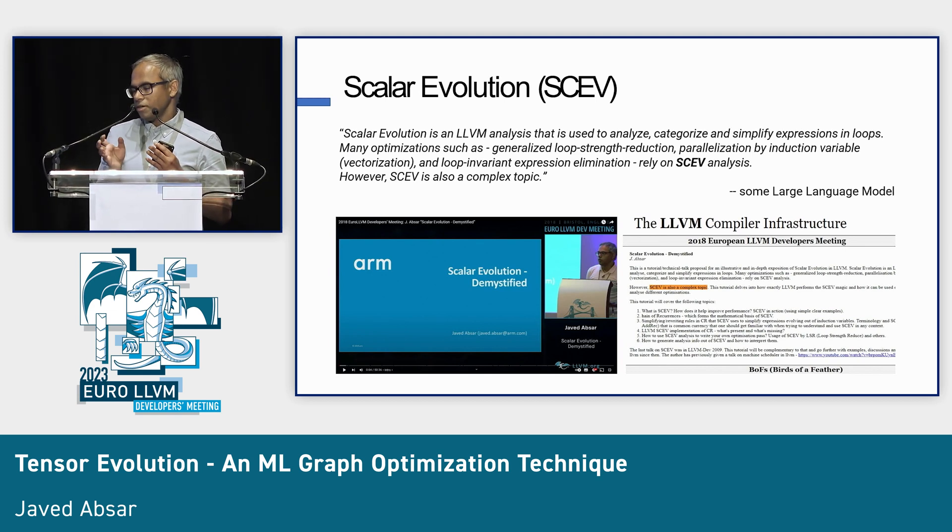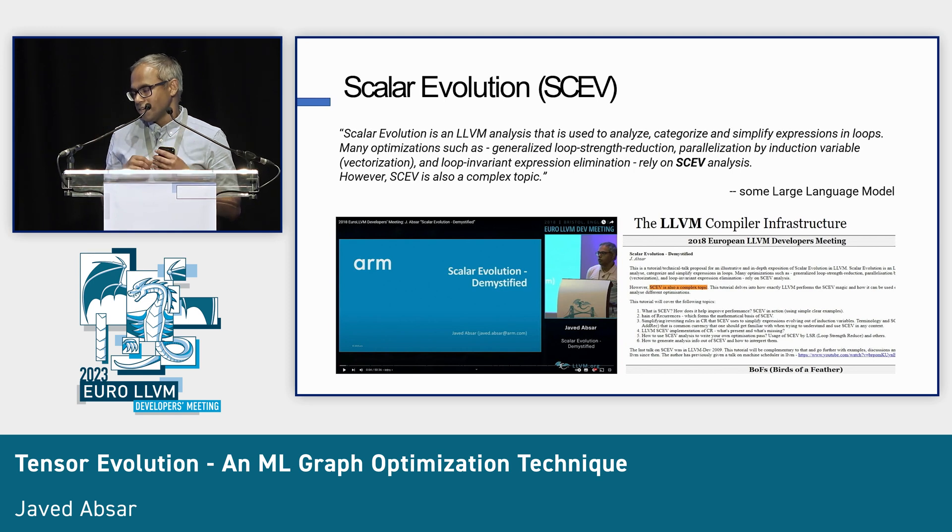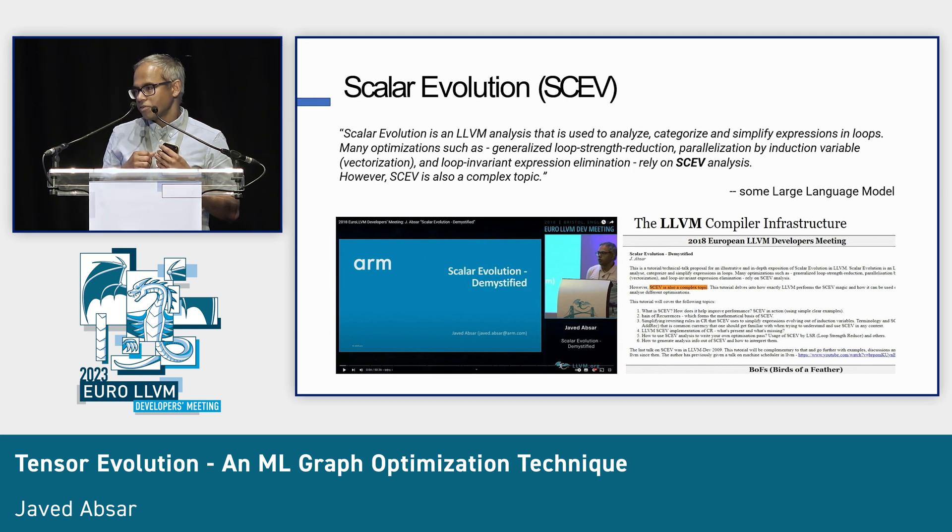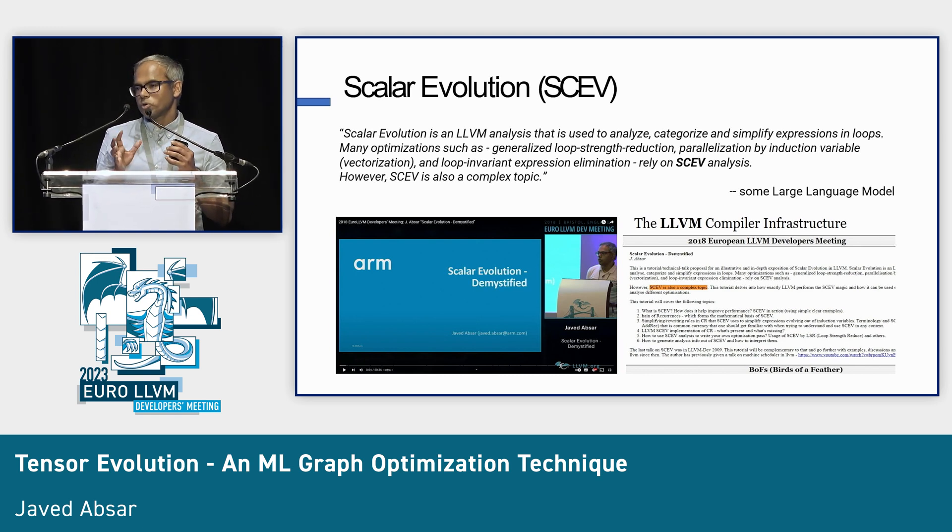Scalar evolution is an LLVM analysis that's used to analyze, categorize, and simplify expressions in loops. Many optimizations such as loop strength reduction, induction variables, expression elimination, rely on SCEV. And then the large language model says, however, SCEV is also a complex topic, and I thought, that's wow. It has looked through all the codes in GitHub and concluded that this is complicated. Yeah, I agree with it.